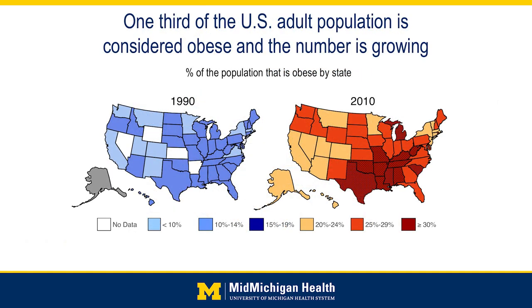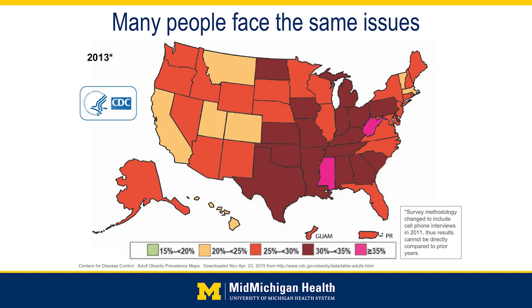Comparing 1990 to 2010 you see the drastic change in rates of obesity across the United States. Currently one-third of the U.S. adult population is considered obese and that number continues to grow every year. The most recent data from 2013 shows some states with rates of obesity above 35 percent. This is a growing public health concern that continues to get worse.